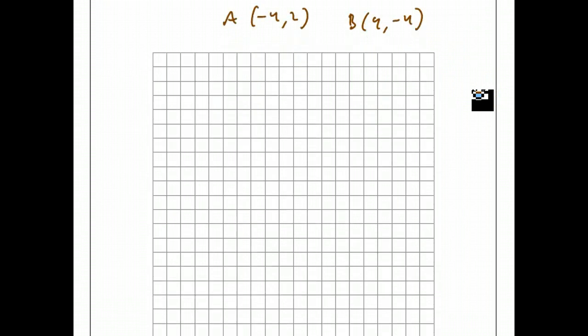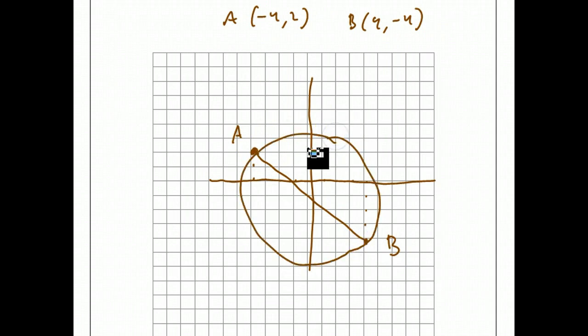I'm going to use this graph. It's optional, but let's take a look at what's going on in this question. If these are my axes, and I plot the point negative 4, 2, that's point A. And point B is at 4, negative 4. And this diagonal line is a diameter of some circle.